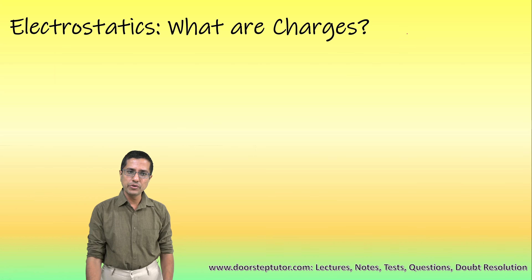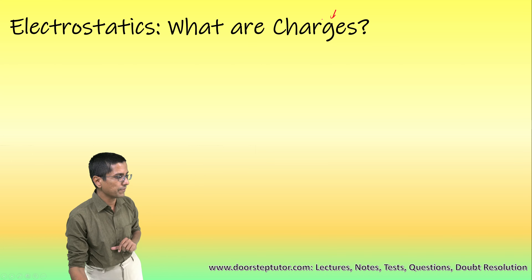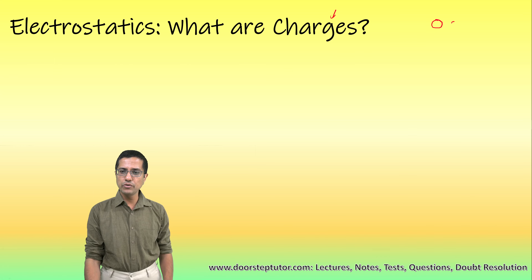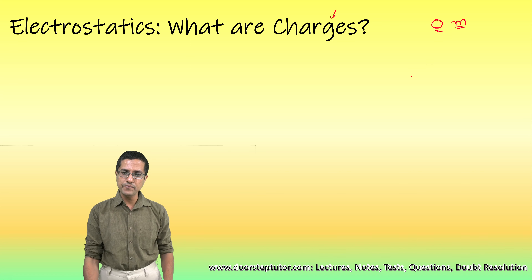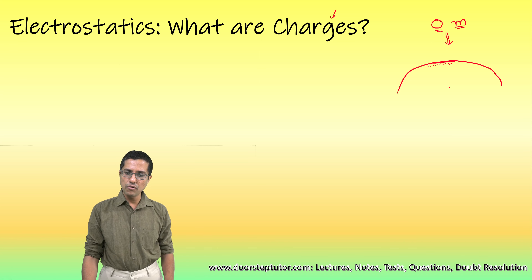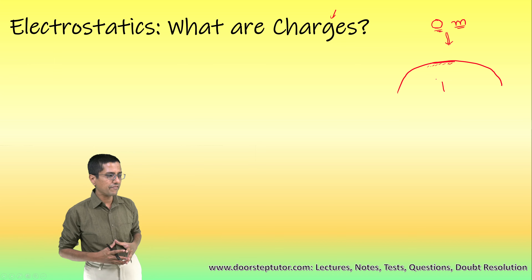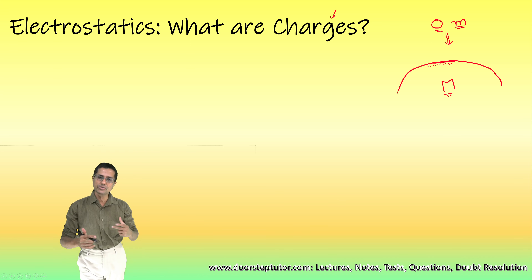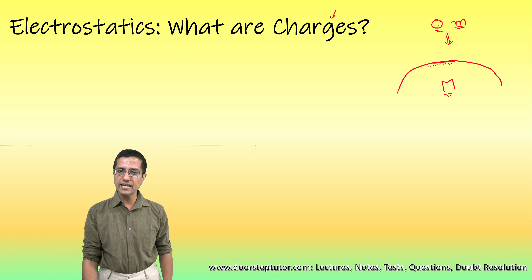Charge is an intrinsic property of a body. To understand intrinsic property, consider another intrinsic property familiar to you — mass. A ball with mass m near the surface of the earth would be attracted towards the earth due to its mass. The earth also has a mass M, and because of the interaction of these two masses, there is a force generated between them — the ball and the earth — and this is known as gravitational force.